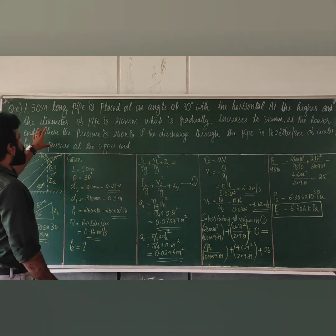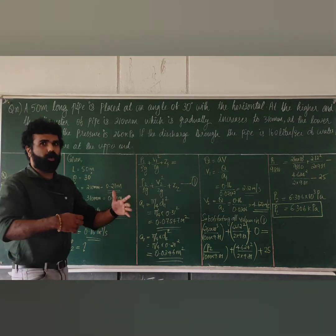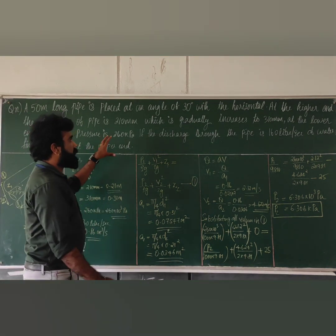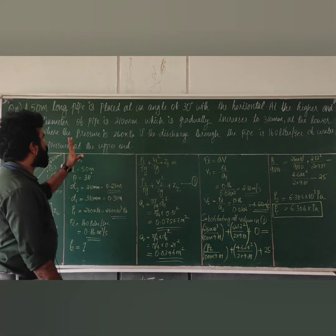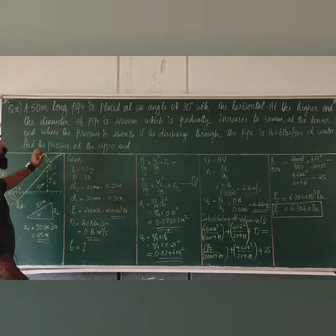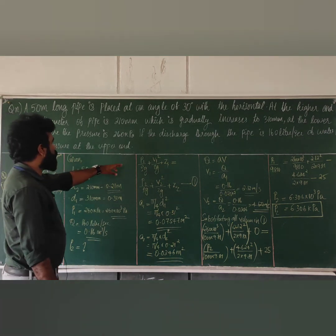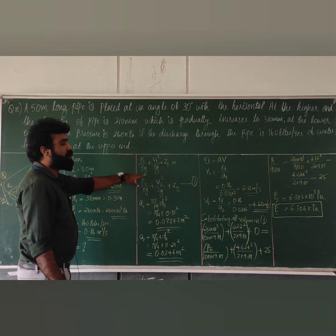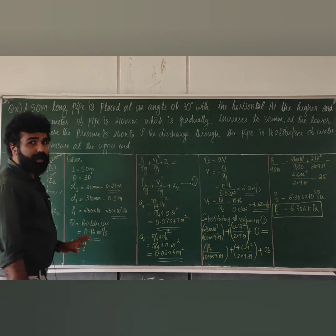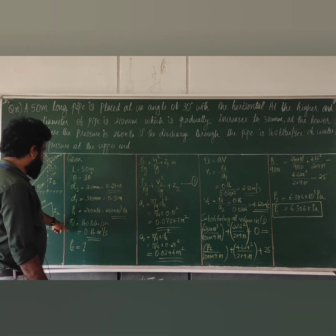In summary, we identified the problem, drew the figure, and recognized it relates to Bernoulli's equation. We listed the given data and unknowns, then substituted all values into Bernoulli's equation and rearranged to find the answer. This is the standard approach for solving pipe flow problems using Bernoulli's equation.